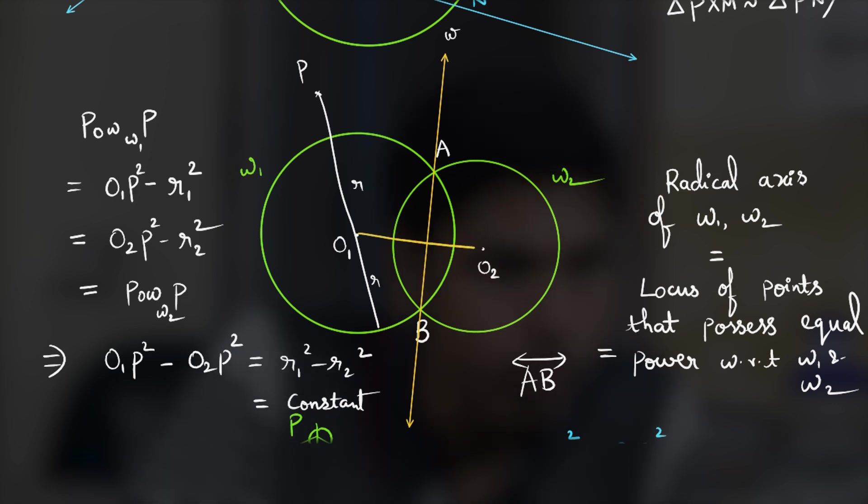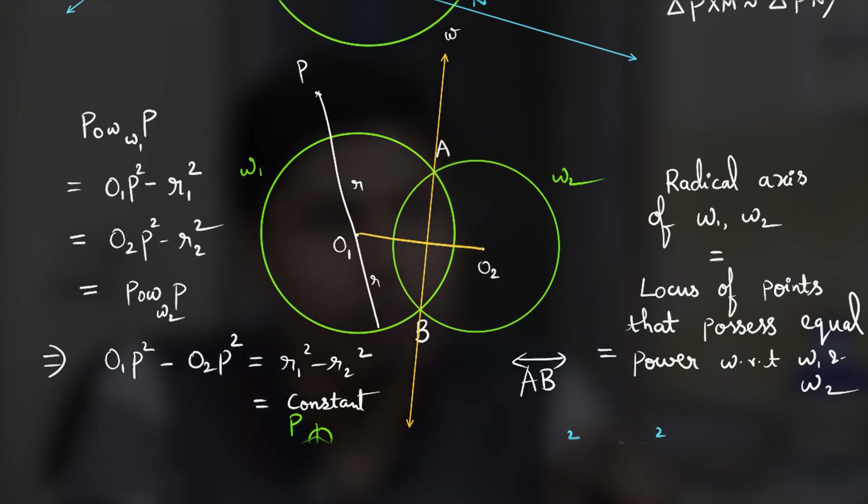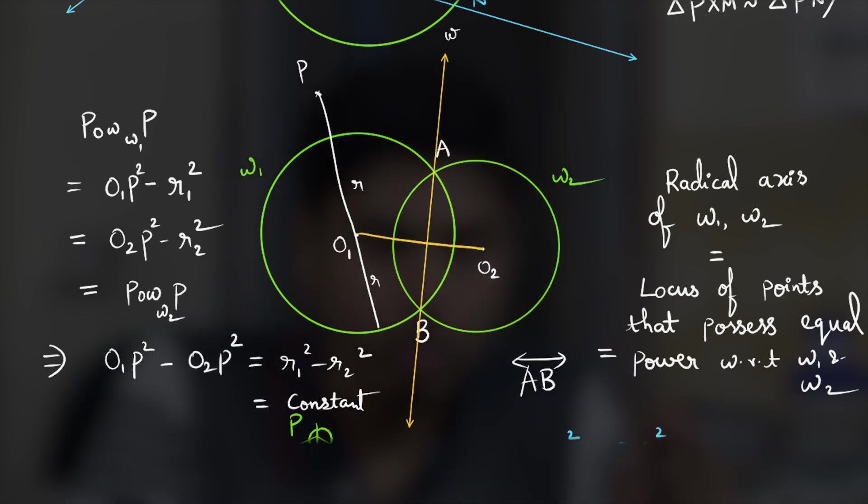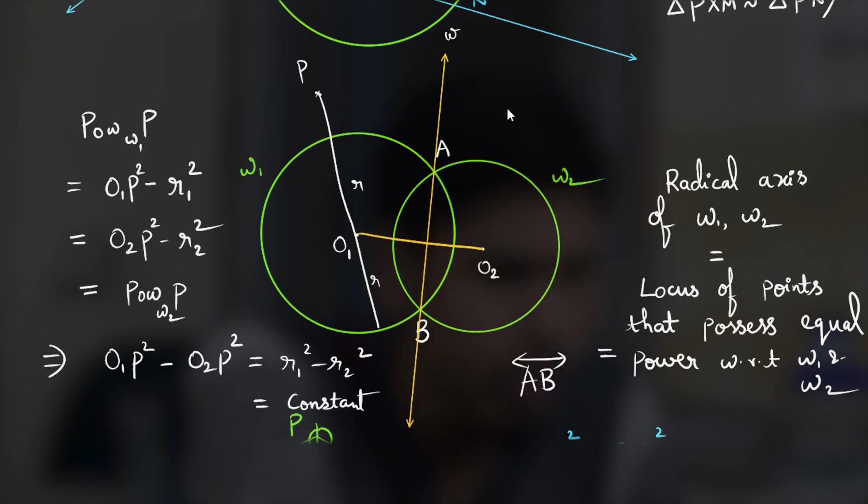Notice that points A and B have power 0 with respect to both circles because they lie on the circle and hence if you consider any line through them the first point of intersection is that point itself making the distance zero. So hence both lie on the radical axis so they determine the line. We know two points determine a line.